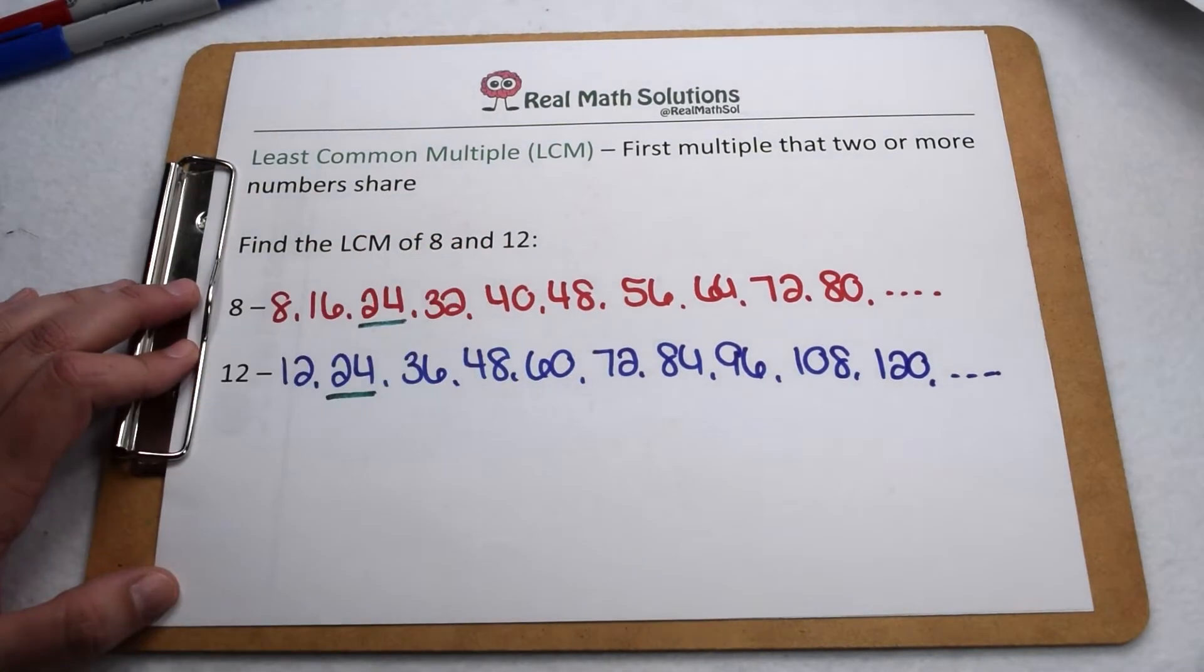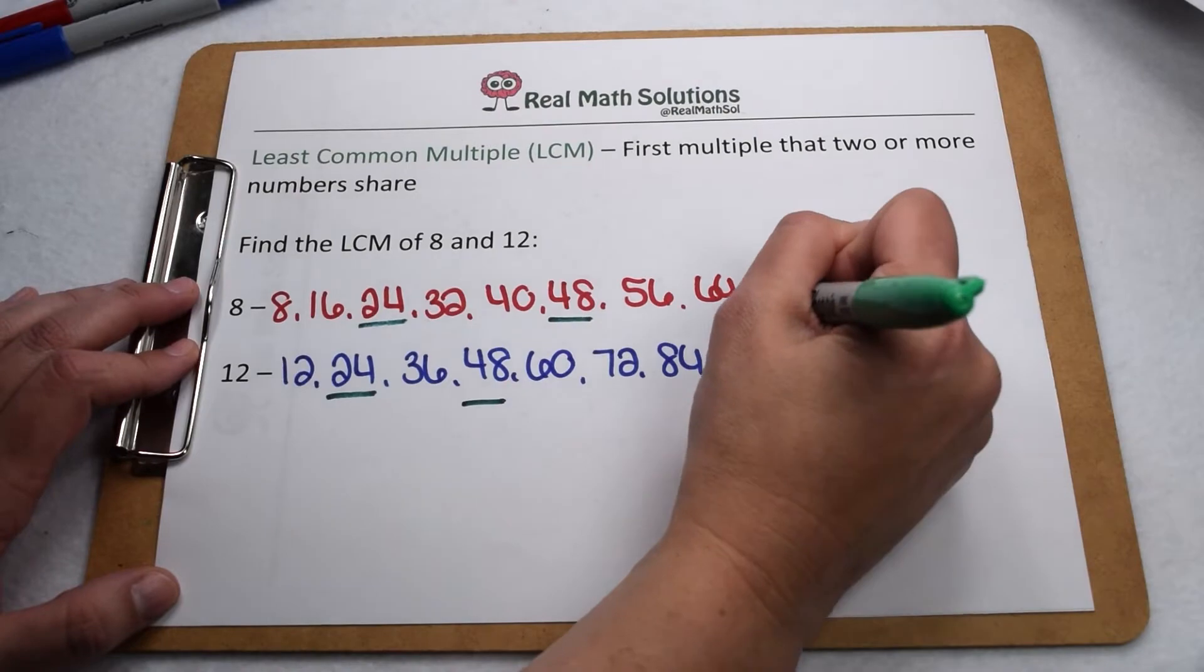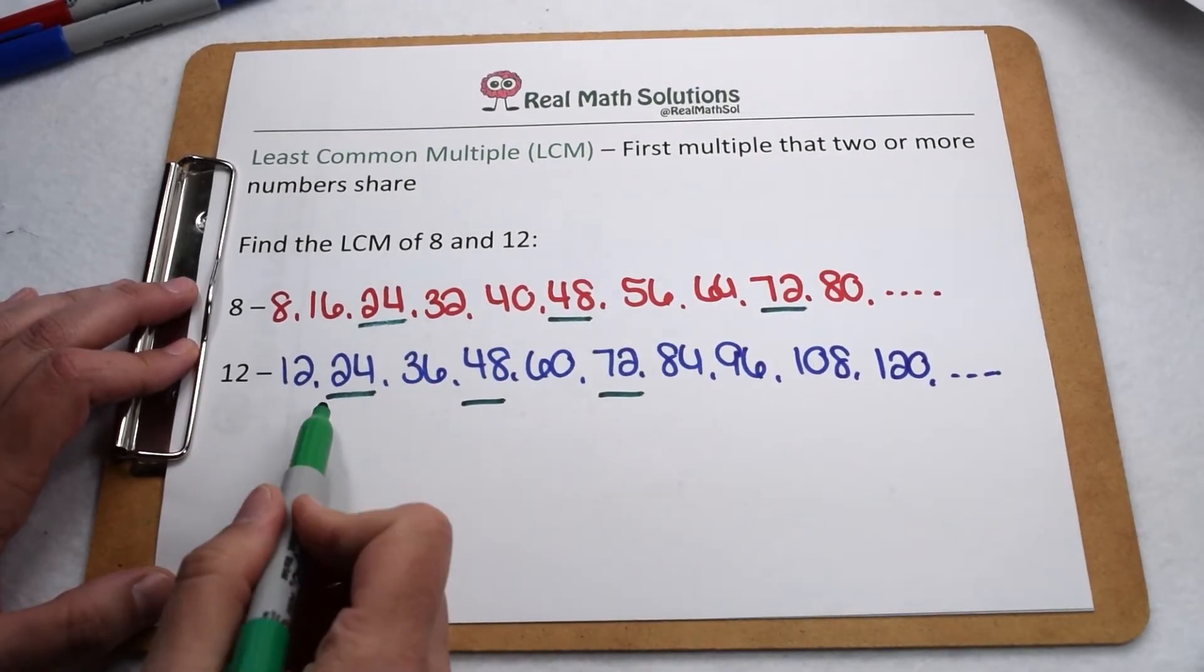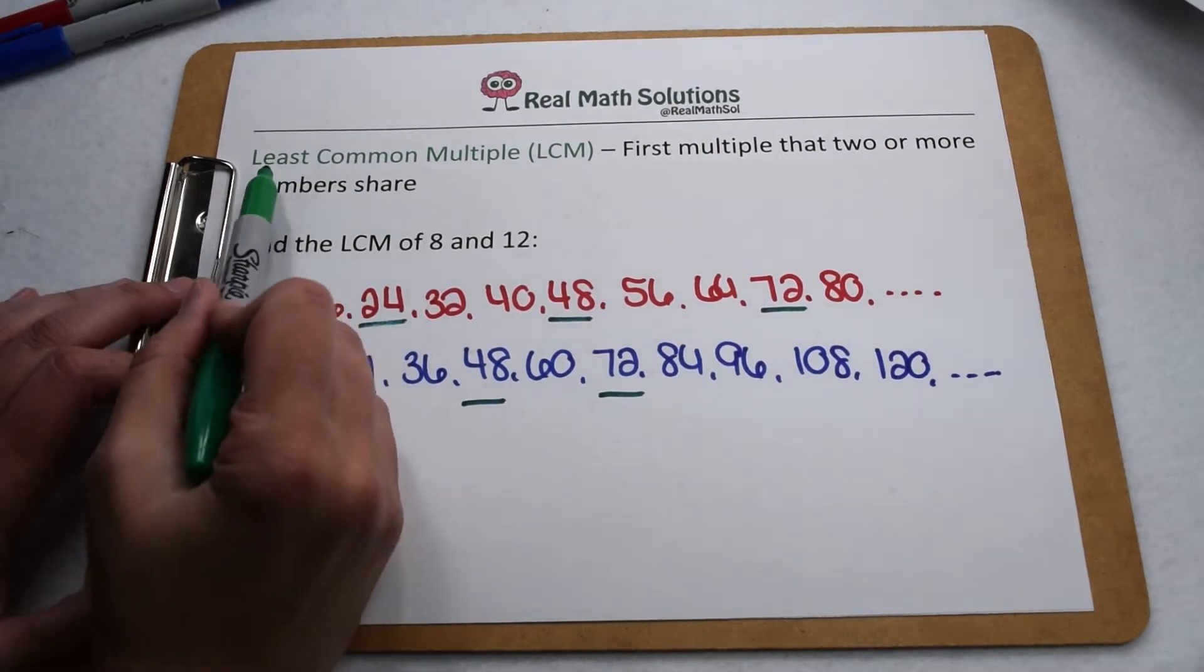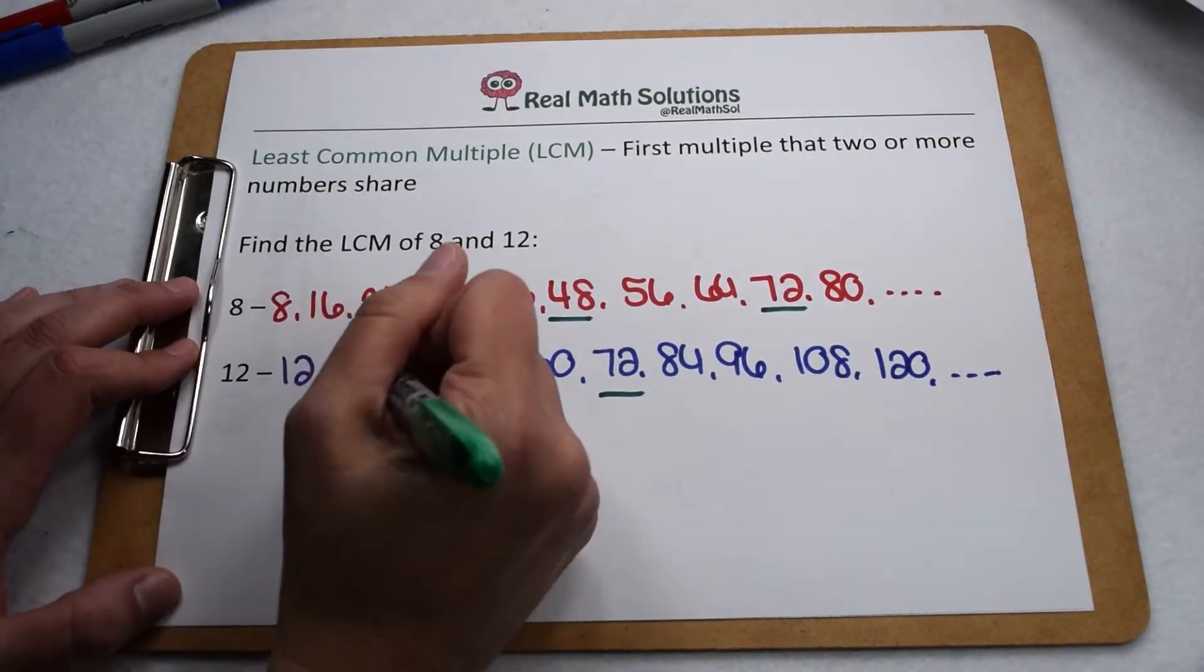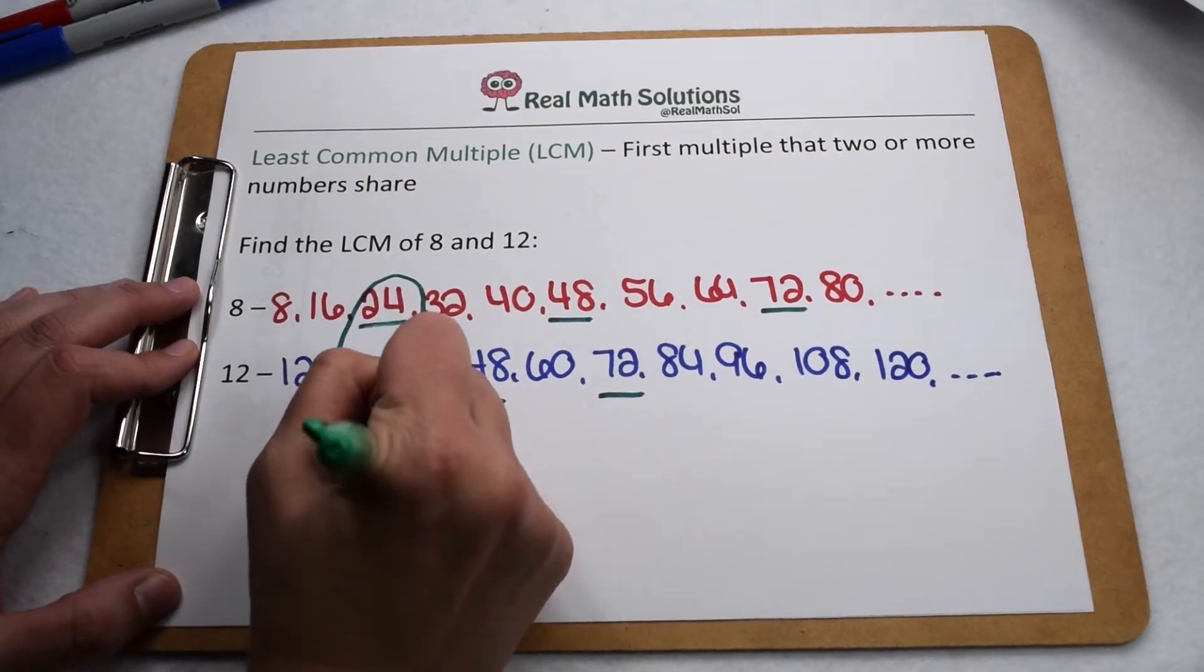If we look, 24 appears on both the list for 8 and 12, as does 48, and so does 72. So 24, 48, and 72 would all be common multiples. But we're specifically looking for the least common multiple, which would be the smallest, or the first one they have in common, which is 24.